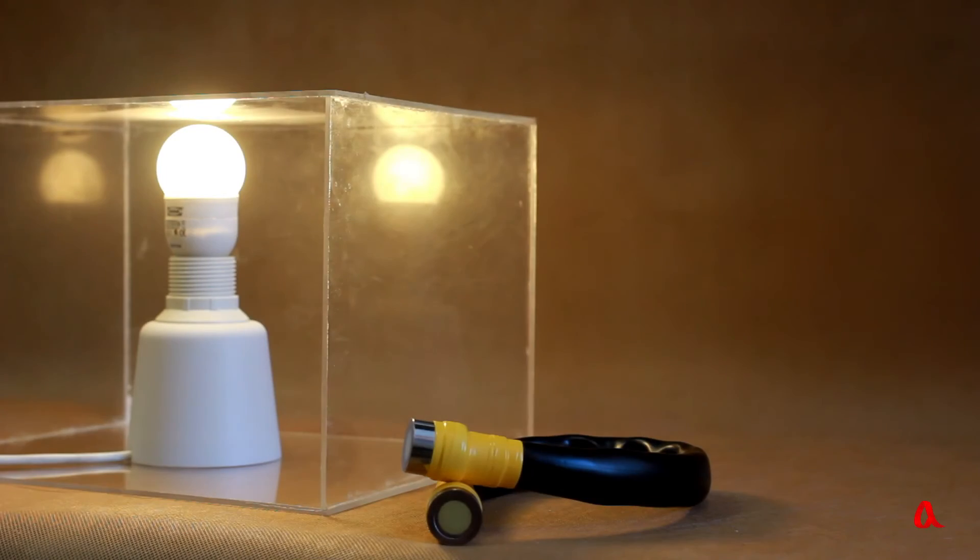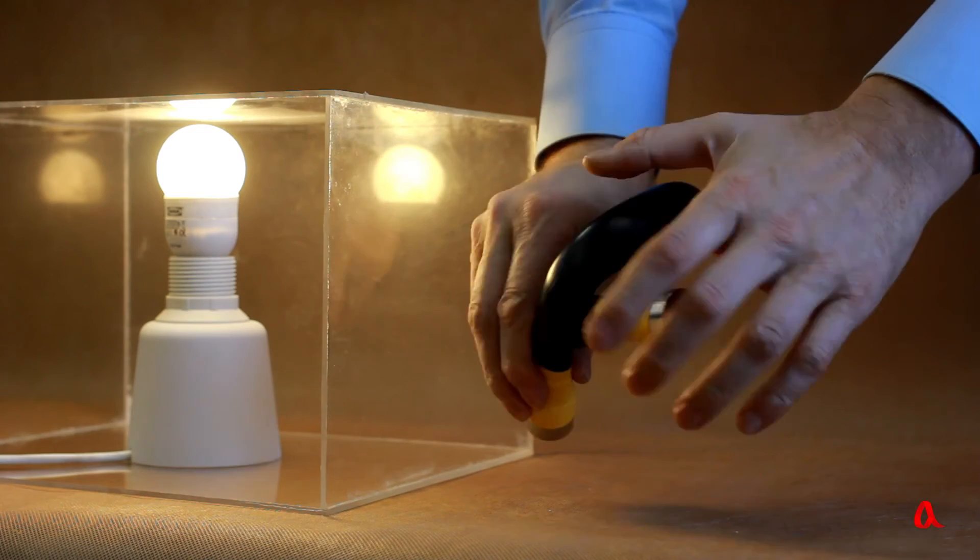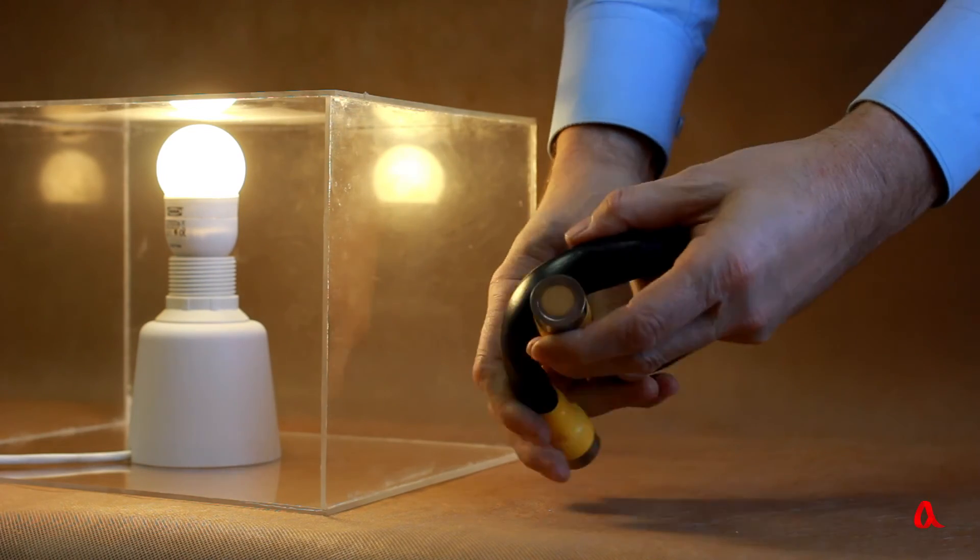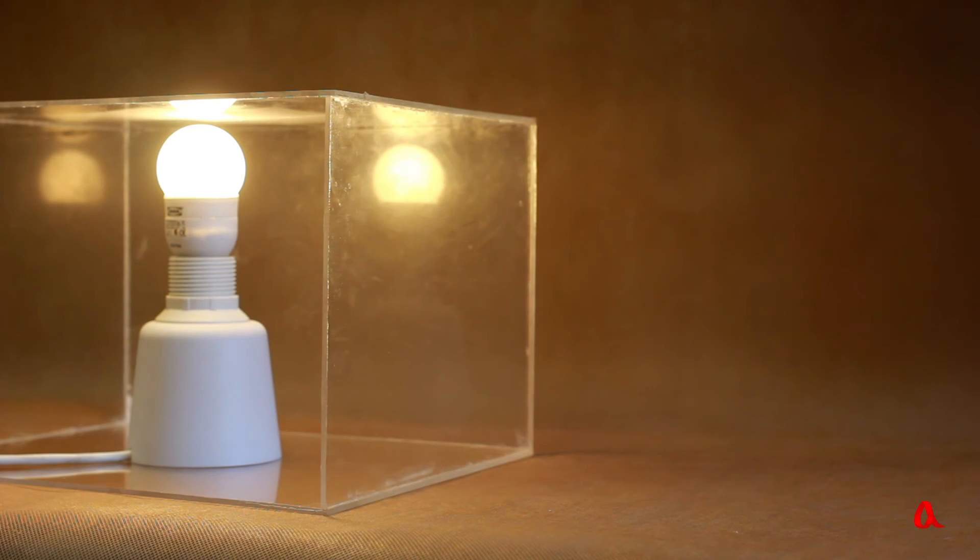Light can be transmitted not only along a curved water jet but along any transparent fiber material. This fiber optic cable contains a very large number of thin flexible fibers.